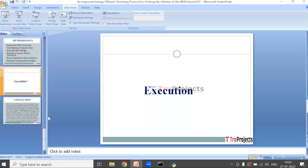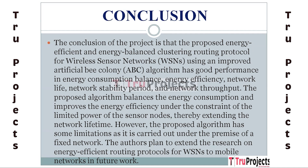The final conclusion: the proposed energy efficient and energy-balanced clustering routing protocol for wireless sensor networks, based on an improved Artificial Bee Colony (ABC) algorithm, performs well in terms of energy consumption balance, energy efficiency, network lifetime, network stability period, and network throughput. Under the limitation of limited sensor node power, the suggested algorithm balances energy consumption and optimizes energy efficiency, hence increasing energy lifetime. However, because it is based on a fixed network, the suggested approach has several drawbacks. In the future, we intend to expand the research on energy efficient routing methods for WSN from fixed networks to mobile wireless sensor networks.